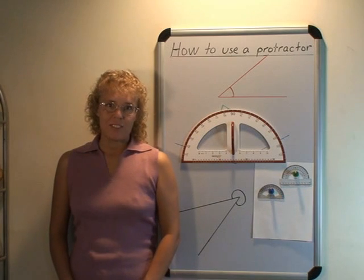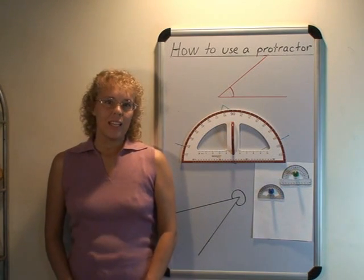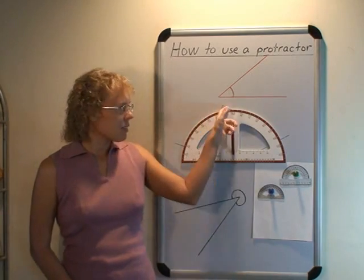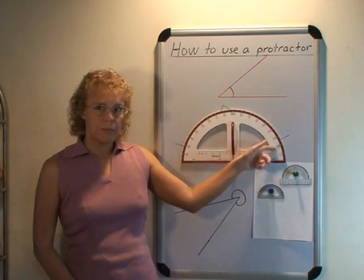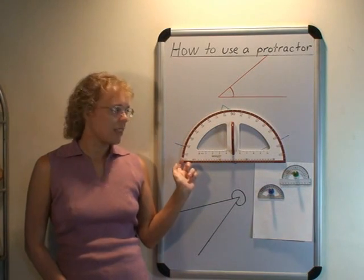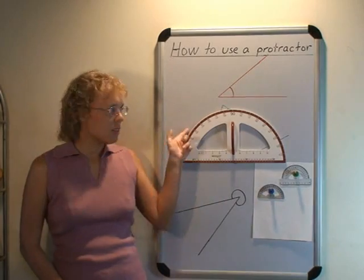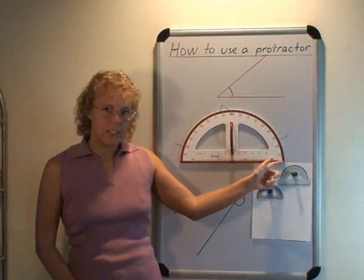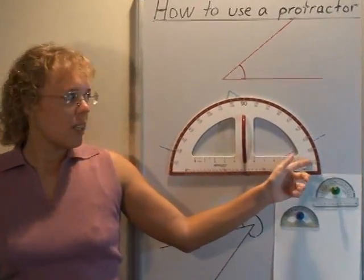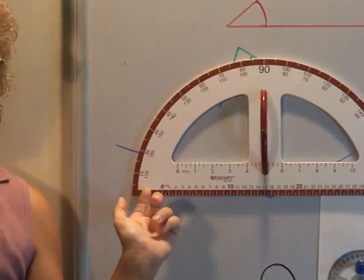On my board I have three different protractors right now. A protractor always has numbers here going up and down, and it is actually two sets of numbers going from 0 to 180. Here it goes starting from here 0 to 180 here. Then it also has another set of numbers, the inner set, from 0 here to 180 here.